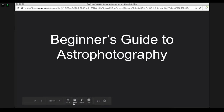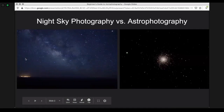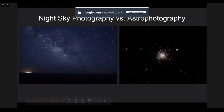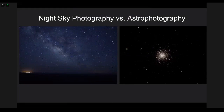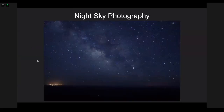Two vocabulary words you'll see associated with this subject: astrophotography specifically refers to taking a picture through a telescope with a camera. Night sky photography is the term for taking a picture of the night sky using just a camera and a tripod. This picture is one I took at Bryce Canyon National Park, and I'm going to show you the process I did for this picture. It really is a lot easier than you might think.